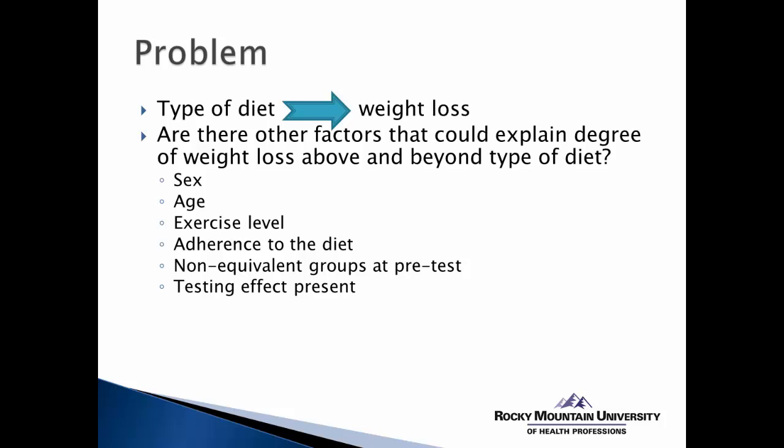But there are other examples in which the post-testing could be different just because they've learned from the pretest, and so that could affect the outcome. And these kinds of variables, what we refer to typically as confounding variables, could have an impact on how well we can determine the effect of type of diet.